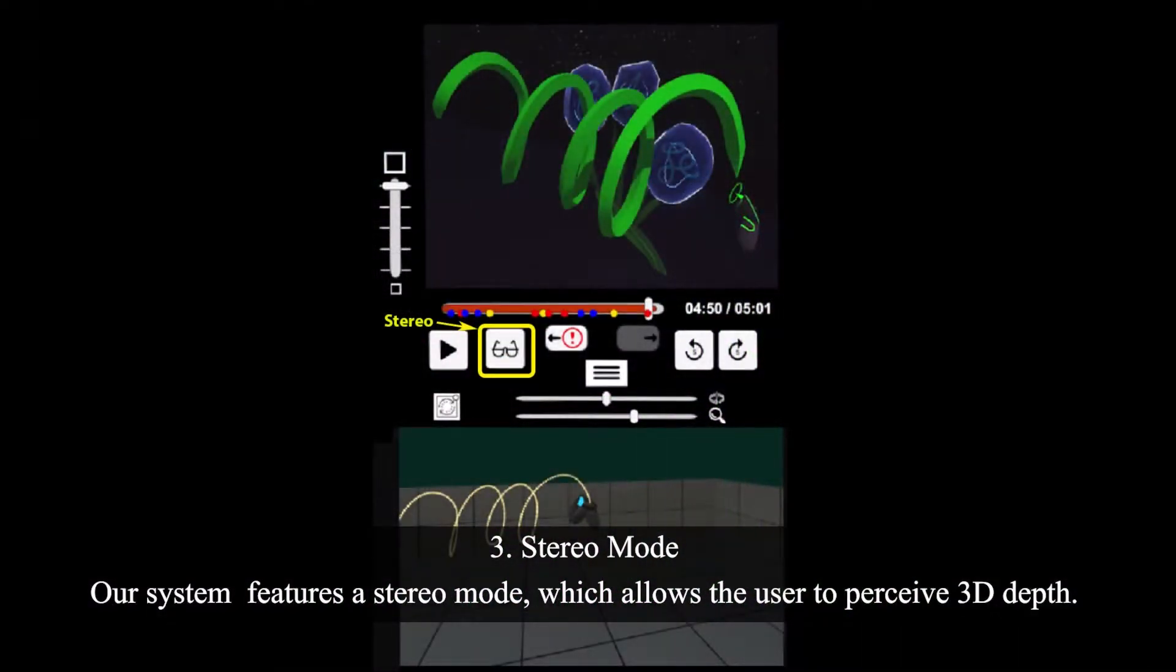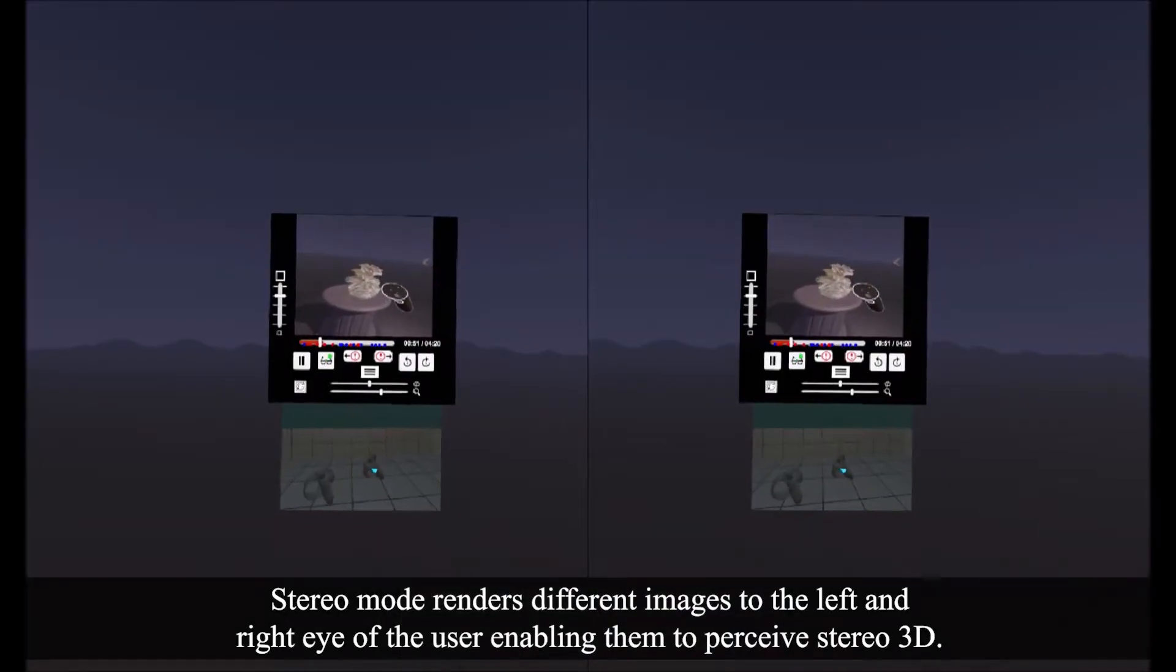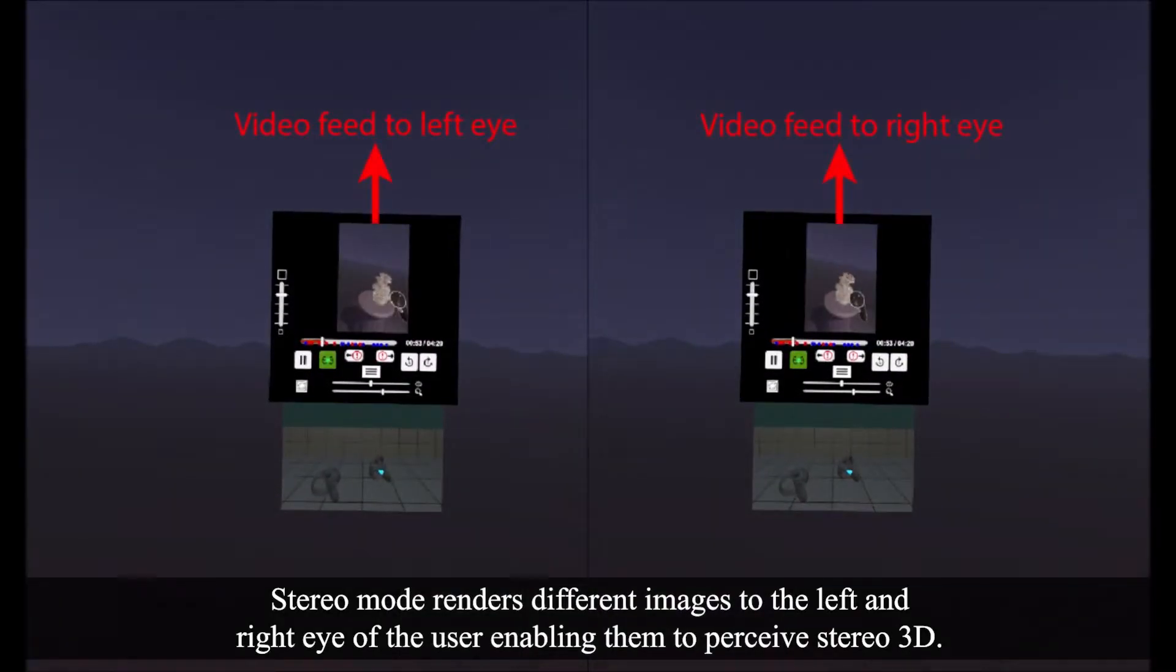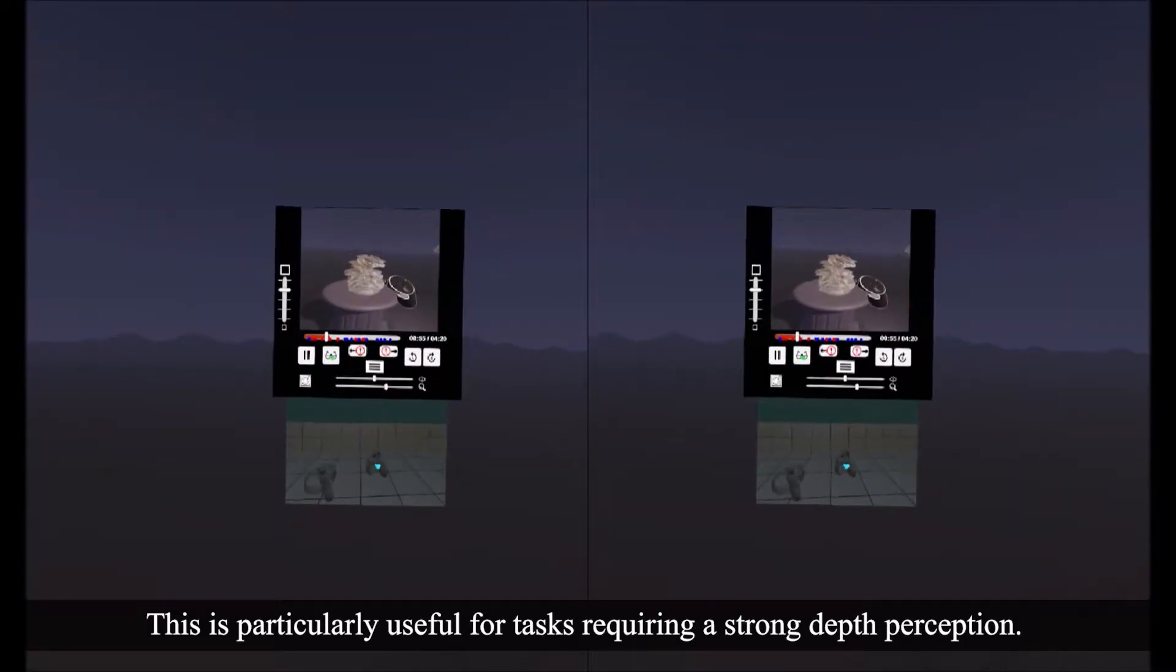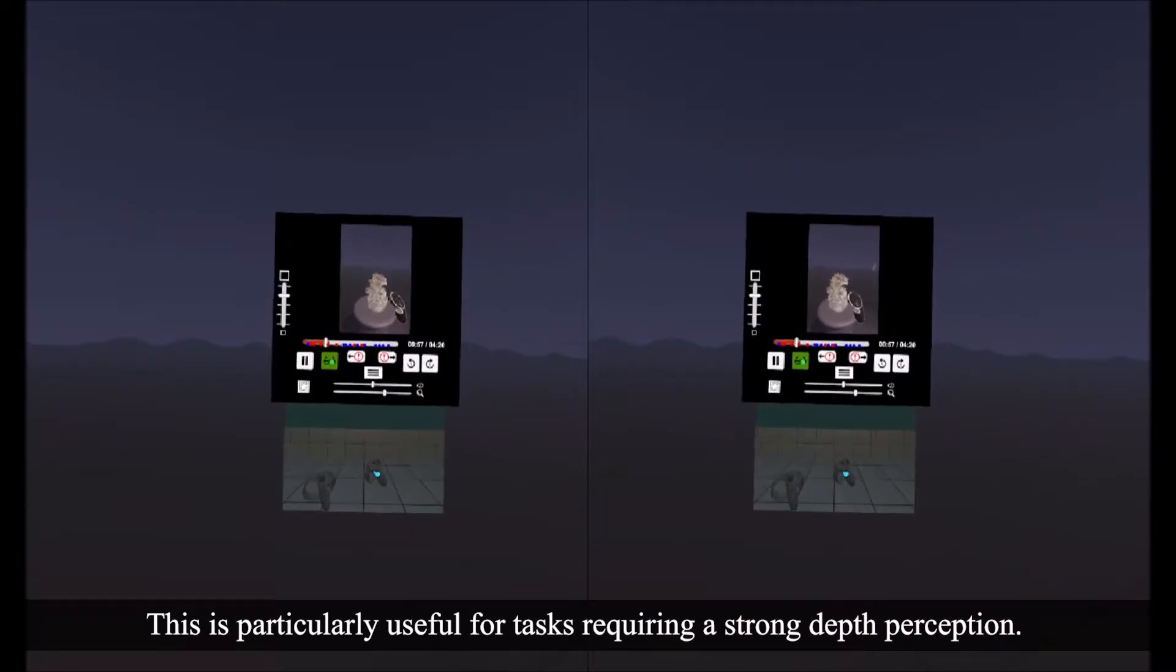Third, Stereo Mode. Our system features a stereo mode which allows the user to perceive 3D depth. Stereo Mode renders different images to the left and right eye of the user, enabling them to perceive stereo 3D. This is particularly useful for tasks requiring strong depth perception.